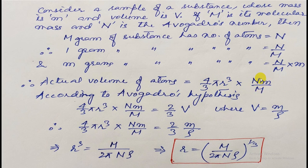This gives you the actual volume. Now according to Avogadro's hypothesis, the actual volume is two-thirds of the total volume occupied. The total volume occupied is given by V, the volume which the sample occupies having a mass m and density rho.